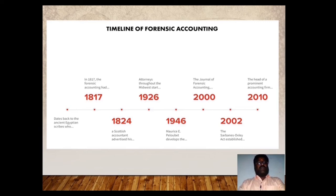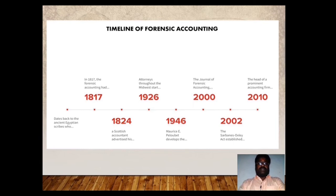In February 2010, the head of a prominent accounting firm interested in protecting the assets of victims in bankruptcy and fraud cases was charged with stealing millions. His firm used to specialize in receivership, litigation support, and forensic accounting. In the Indian context, the history of investigative accounting goes back to the ancient Mauryan times. Kautilya was the first person to mention the famous 40 ways of embezzlement in his famous Arthashastra.